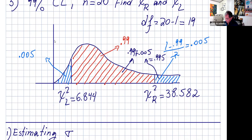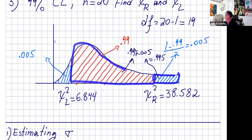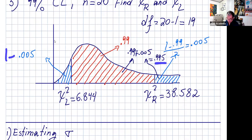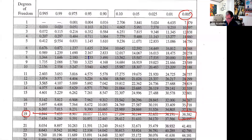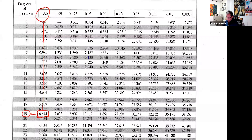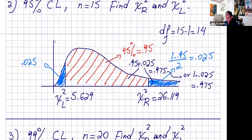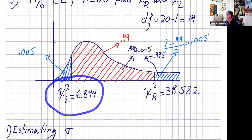To find the left value one more time, we need all the area to the right of that number: this area plus that area, 0.99 plus 0.005, which is 0.995. Or you can do one minus that number and get the same answer. So 0.995 and degrees of freedom 19 — we get 6.844. Let's check the answer — and we got 6.844.